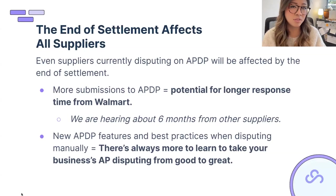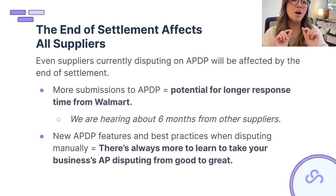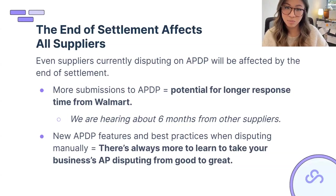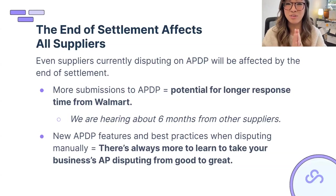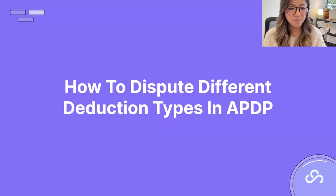We've heard Walmart is working on staffing up the team, potentially bringing review back to the US from the offshore team in India. Due to the volume of claims coming through, Gen Pact is making quick decisions to clear the queue, resulting in false negatives — claims that should have been approved getting denied. We recommend reviewing any recent denials carefully, because we've seen cut-and-dry cases get denied, then re-disputed, and Walmart approves them saying 'our bad.'